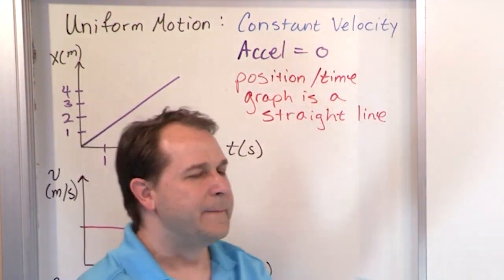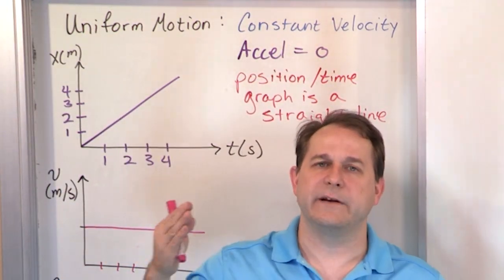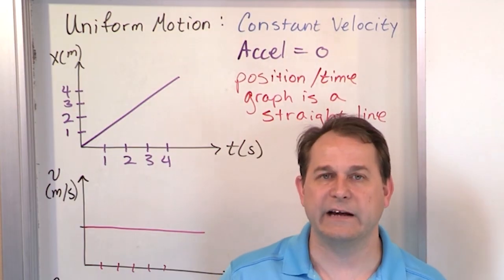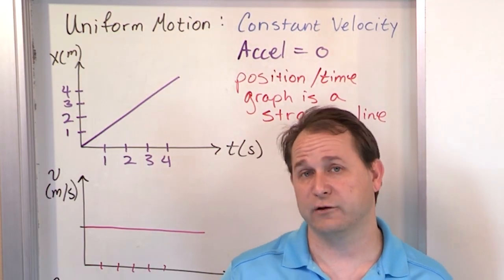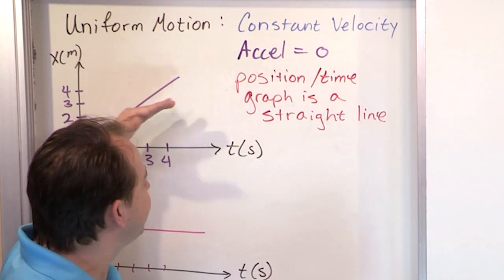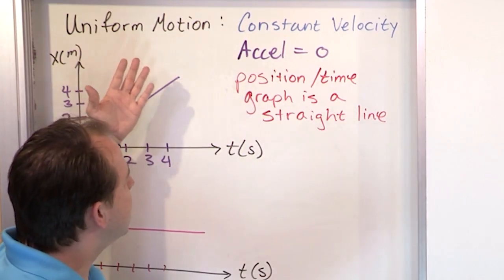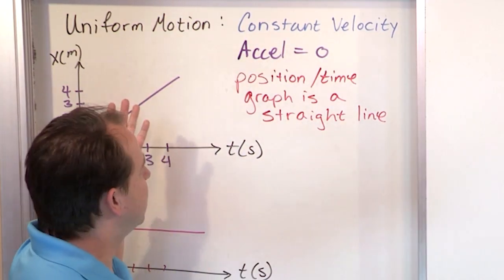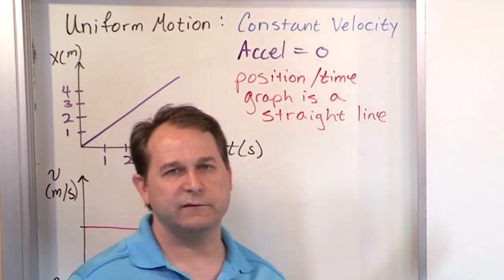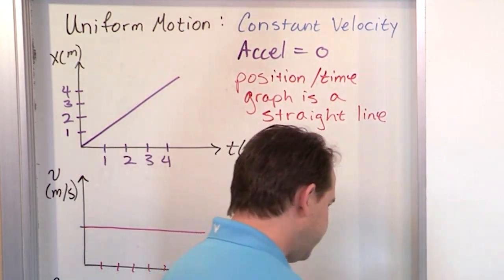It's not that there are three different things that make it uniform motion — it's all the same thing, just three different ways to look at it. Uniform motion is when the position-time graph is a straight line with some slope, which also means the acceleration is zero, which also means the velocity is constant.